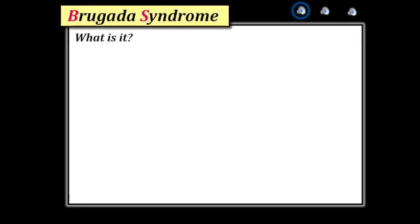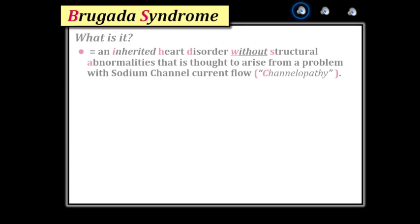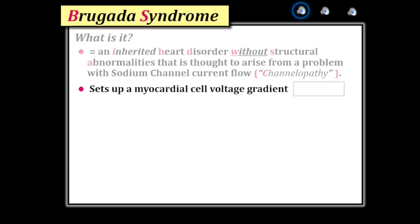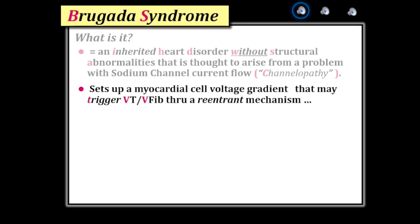Brugada syndrome is an inherited heart disorder without structural abnormality. It is thought to arise from a problem with sodium channel current flow — hence referral to the syndrome as a channelopathy. Specifically, there is thought to be an accelerated inactivation of sodium channels, which results in development of a predominant transient outward potassium current. This may set up a myocardial cell voltage gradient primarily found within right ventricular myocardial layers, which explains why ECG abnormalities are primarily seen in right ventricular leads: V1, V2, and V3.